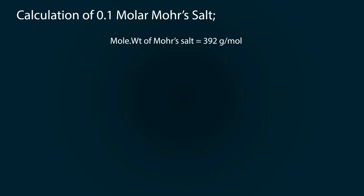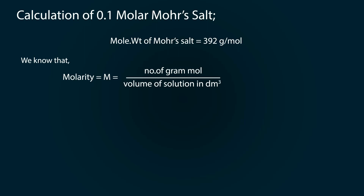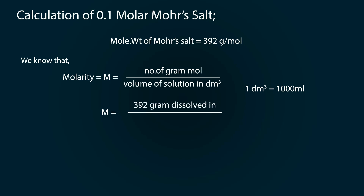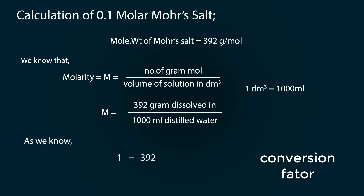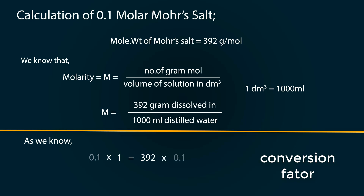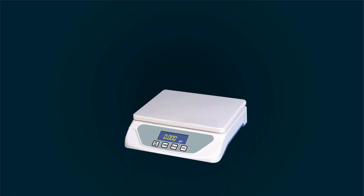Let's calculate the molarity of a 0.1 molar solution. The molecular weight is 392 grams per mole. Molarity equals number of gram moles divided by volume of solution in dm³, where 1 dm³ equals 1000 milliliters. So 392 grams dissolved in 1000 mL gives a 1 molar solution. Multiplying both sides by 0.1, for a 0.1 molar solution we need 39.2 grams.